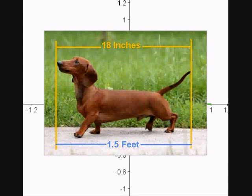When we measure length, we have different units we can work with. This wiener dog is measured in inches, and it's also measured in feet. 18 inches is the same length as 1.5 feet, but we're using different units.